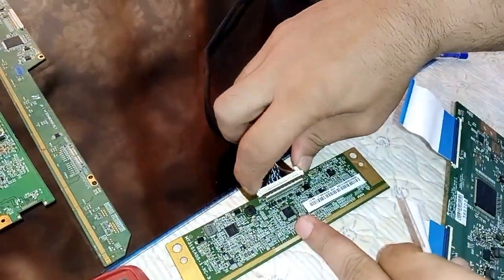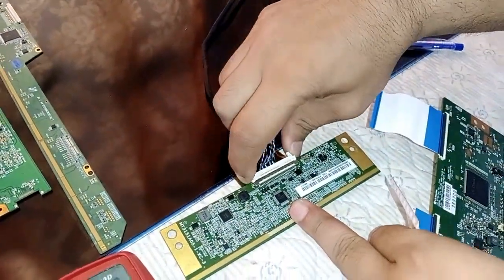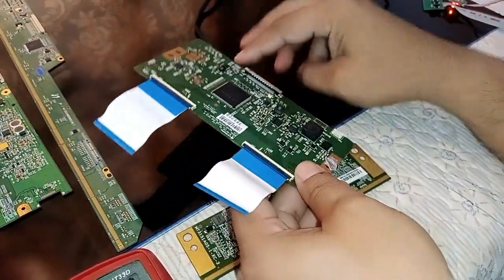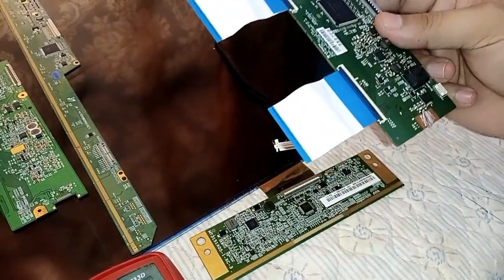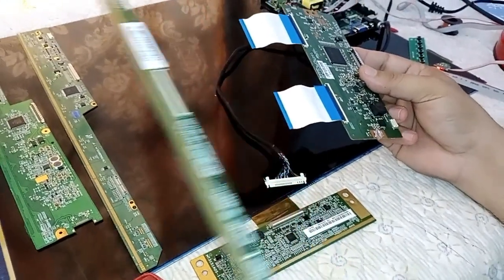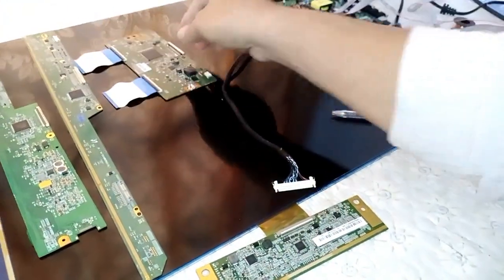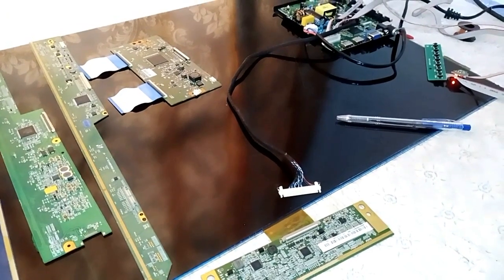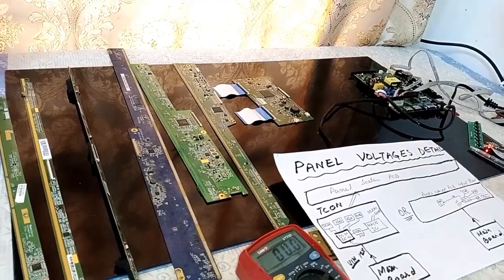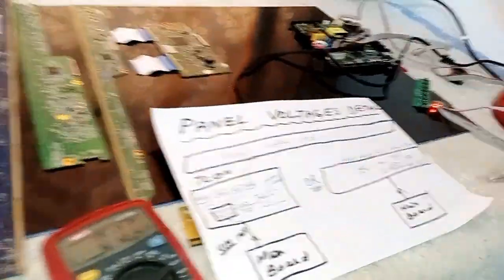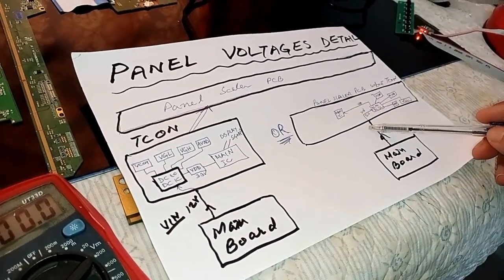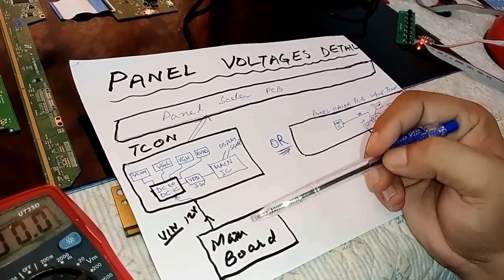This LVDS cable goes to the panel side. I will explain both cases today — how many voltages there are — using this figure. There are two cases: one with T-Cone and one without T-Cone.